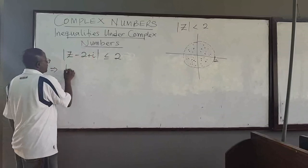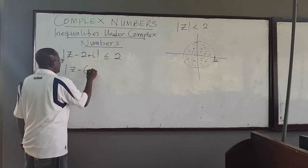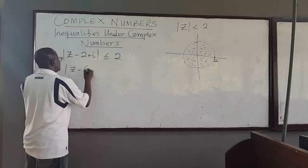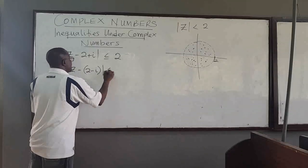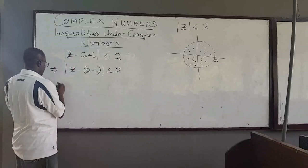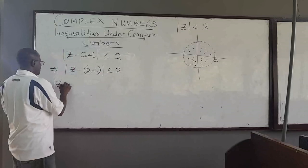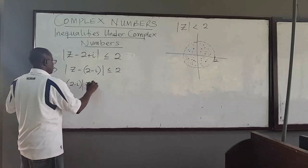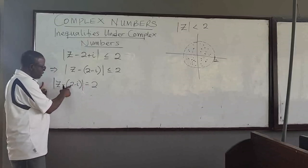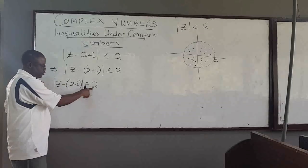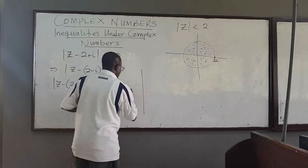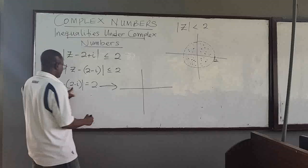Note that you can rewrite this as |z - (2 - i)| less than or equal to 2. If you consider the equality, |z - (2 - i)| = 2, this shows that it is a circle with center (2, -1) and radius 2.